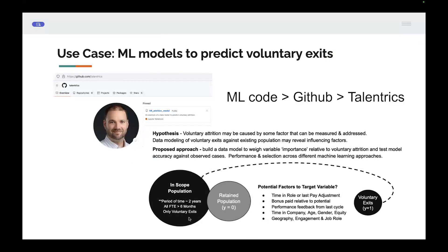You can see here the hypothesis. We have the in-scope population. We've whittled down the data to a certain period of time, two years, people that were active in our company, all of the full-time employees. So we're not including any contractors, anybody who's been active more than six months, and we're only looking at voluntary exits. If there was an involuntary exit, we're not counting that in our data. The retained population, the outcome is zero. And then for the voluntary exits, the outcome is going to be one.